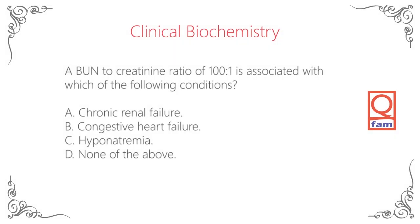A BUN to creatinine ratio of 100 to 1 is associated with which of the following conditions? A. chronic renal failure, B. congestive heart failure, C. hyponatremia, D. none of the above.